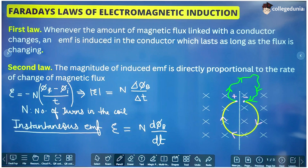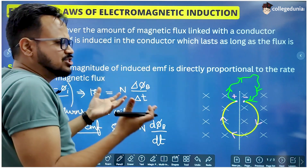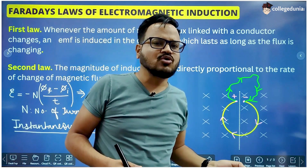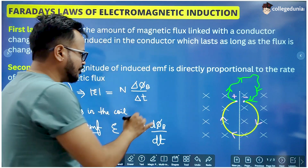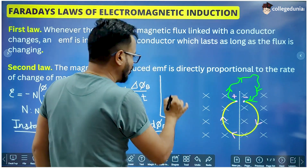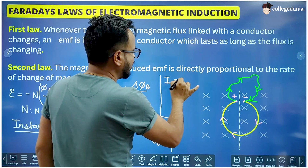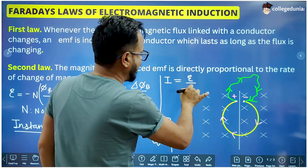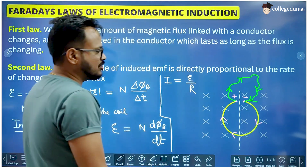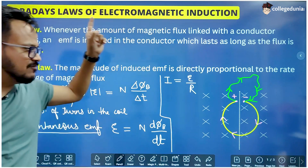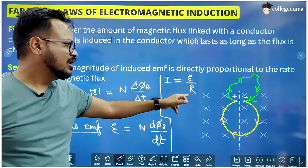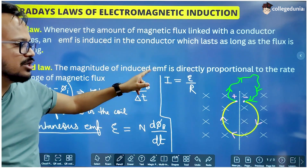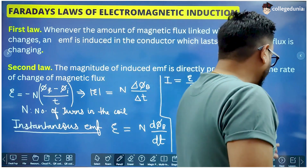In most numericals on the second law, there is no mention of number of turns, so you take number of turns as 1. The induced current is simply E divided by R, where R is the resistance of the coil — this formula comes directly from Ohm's law. So induced current is calculated using I = E/R.